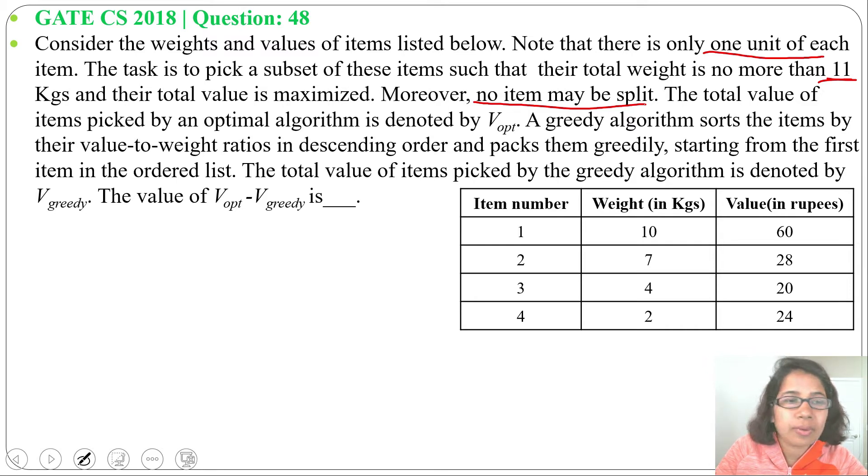The total value of items picked by an optimal algorithm is denoted by V_opt, that is value for optimal. A greedy algorithm searches the items by their value-to-weight ratio in descending order and packs them greedily.